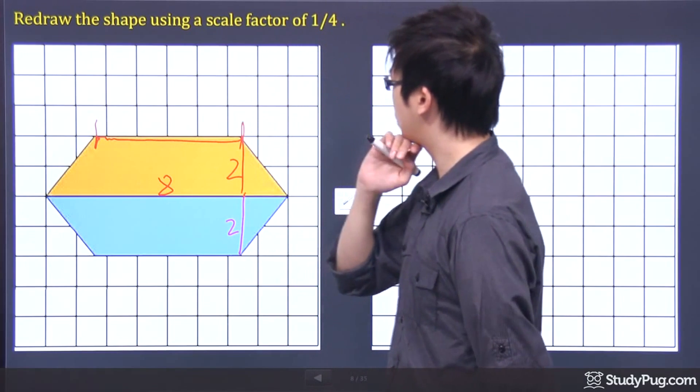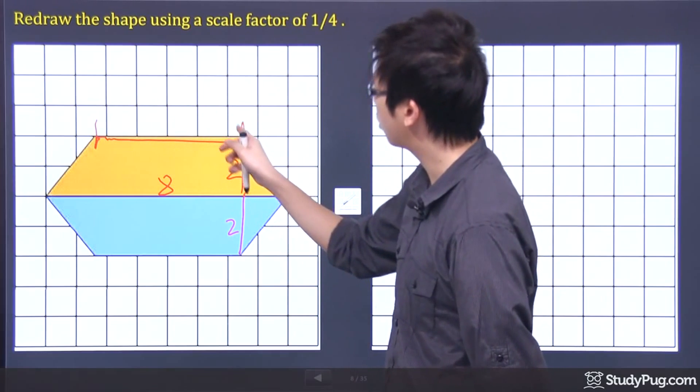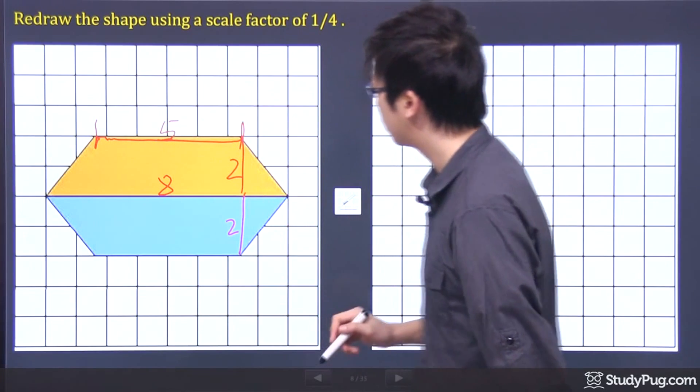And from here to here, that's 1, 2, 3, 4. Looks like 5.